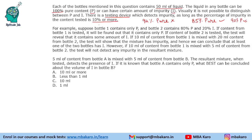They have given an example: suppose bottle 1 contains only P and bottle 2 contains 80% P and 20% I. If content from bottle 1 is tested, it will be found to contain only P. If content from bottle 2 is tested, the test will reveal it contains some amount of I. If 10 ml from bottle 1 is mixed with 20 ml from bottle 2, the test will show the mixture has impurity, and we can conclude at least one of the two bottles has I.